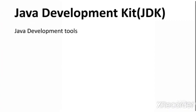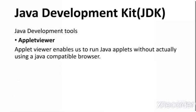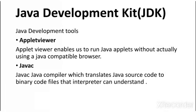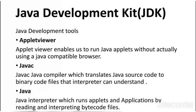The Java Development Kit includes a set of tools required for developing a Java program. The first tool is the Applet Viewer, which enables us to run Java applets without actually using a Java-compatible browser. Next is JavaC, the Java compiler, which translates Java source code into binary code called bytecode; this bytecode is later given to a Java interpreter for execution. Java, the interpreter, runs Java applets and applications by reading and interpreting the bytecode files generated by the Java compiler.